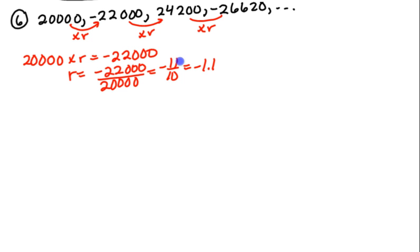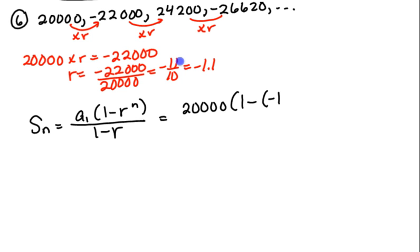So what formula do we use for the sum of the first 20 terms? We use S sub n equals a sub 1 times 1 minus r to the n over 1 minus r. Filling in the numbers here, that would be 20,000 times 1 minus negative 1.1 to the 20th, or negative 11 tenths, either one will work, over 1 minus negative 1.1.